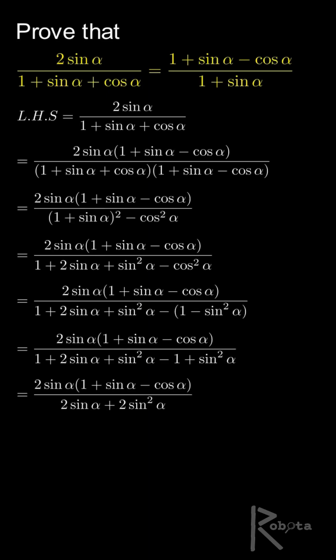Now factor 2 sin α from the denominator, which gives 2 sin α multiplied by 1 plus sin α. In the numerator, we have 2 sin α multiplied by 1 plus sin α minus cos α.